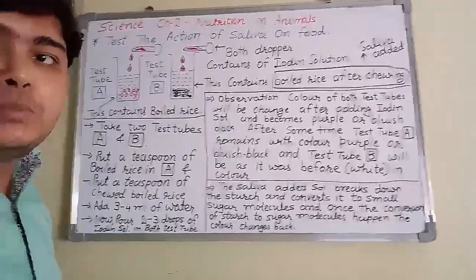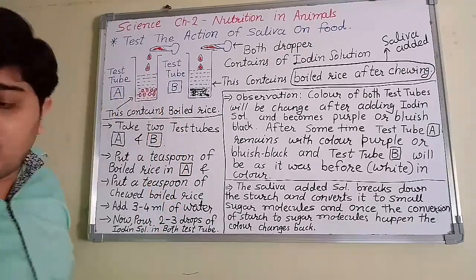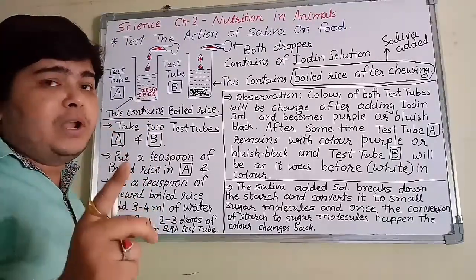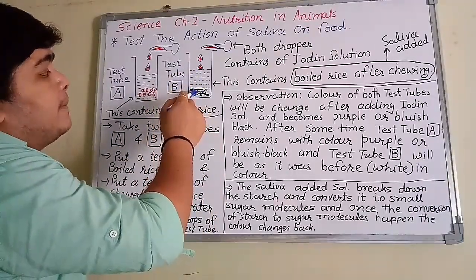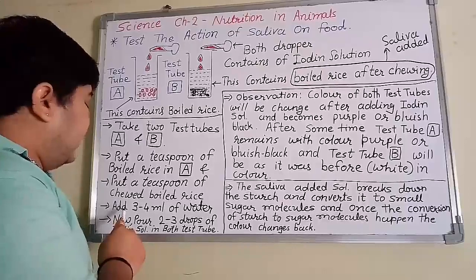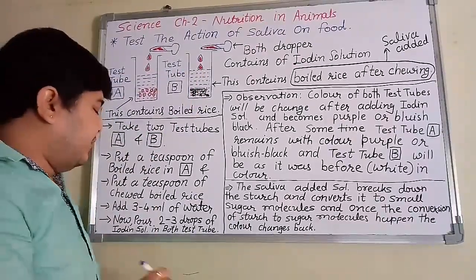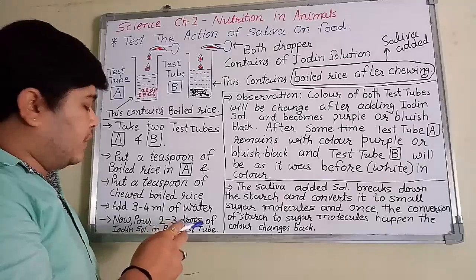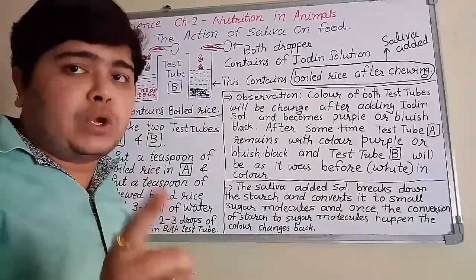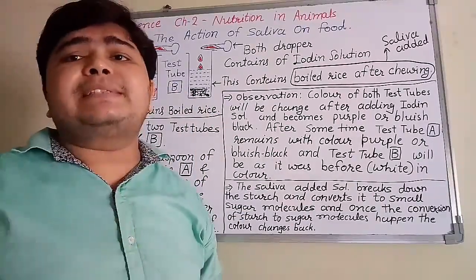The procedure: take two test tubes A and B. Put a teaspoon of boiled rice in A — as you can see the red circle indicates the boiled rice — and in test tube B there is a black colored mixture which is boiled rice mixed with saliva. Now add three or four ml of water in both, then add two or three drops of iodine solution in both test tubes equally.